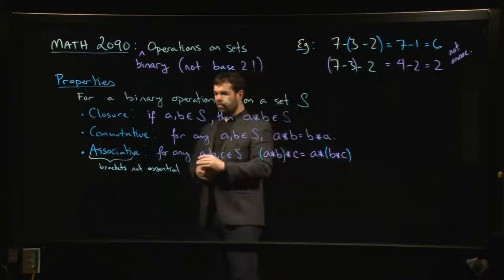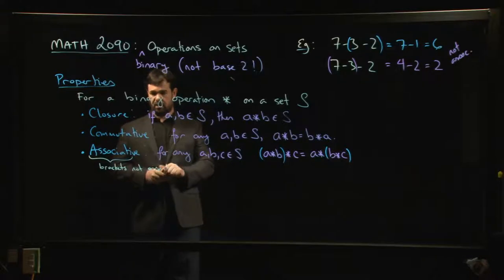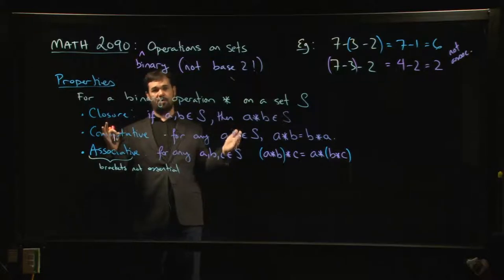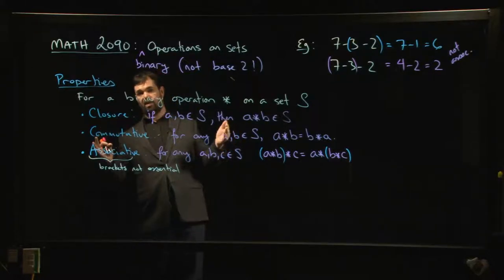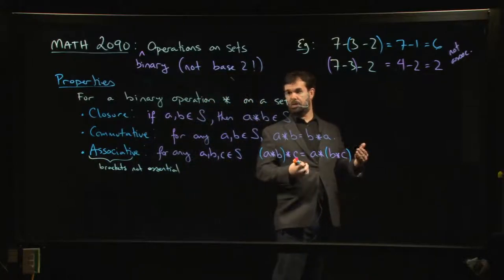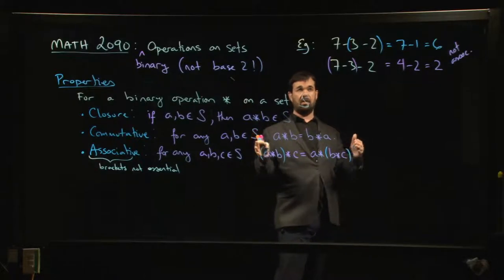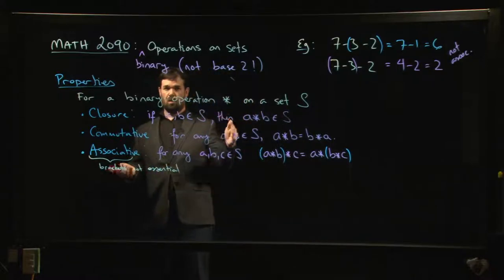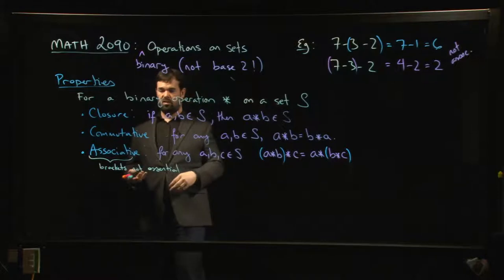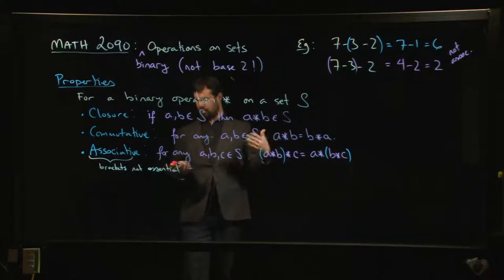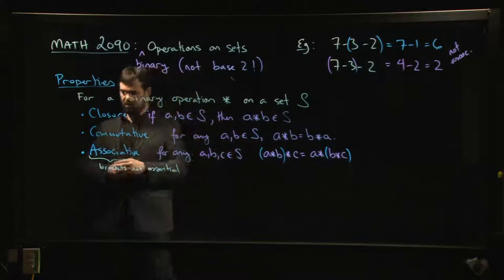A lot of basic number facts students learn early on — like tricks for doing addition, breaking 10 up as 1 plus 9, or 5 plus 5, or 7 plus 3 — rely on these properties. It can be useful to know you could break 10 up as 3 plus 7 or 7 plus 3 and the order won't matter. Even if you don't know these properties by name formally, you have them working in the background for you.